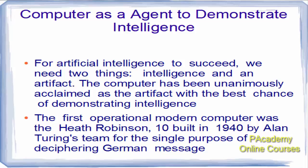The first operational modern computer was the Heath Robinson, built in 1940 by Alan Turing's team for the single purpose of deciphering German messages. That is how you need a computer as an agent to demonstrate intelligence.